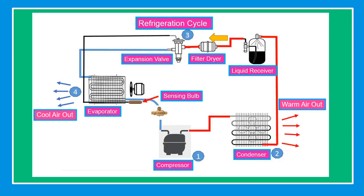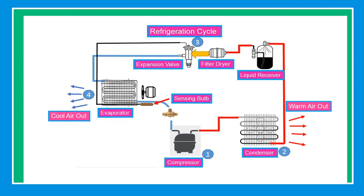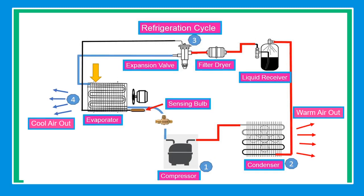Then through the filter dryer — the job of the filter dryer is to absorb any moisture in the system. The metering device, or expansion valve, number three, is the dividing point between the high-pressure and low-pressure sides of the system. It is designed to maintain a specific rate of flow of refrigerant into the low side. Then the refrigerant moves to the evaporator, which absorbs heat from the outside air and changes the liquid back to gas.